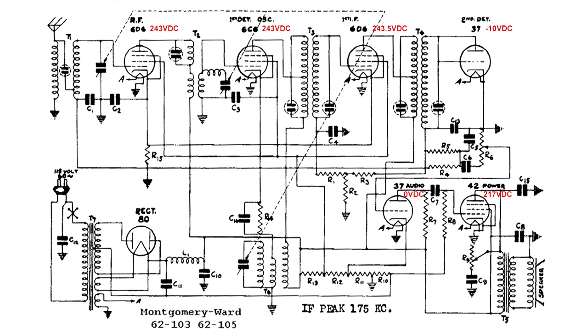And if you go across, everything looks pretty normal, except all the way to the right, that 37 tube there. It shows that it should be zero volts there.